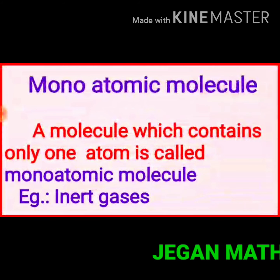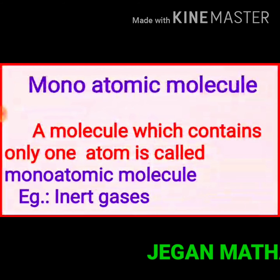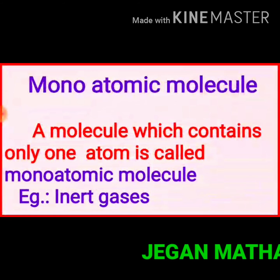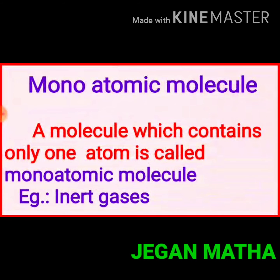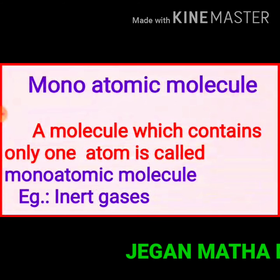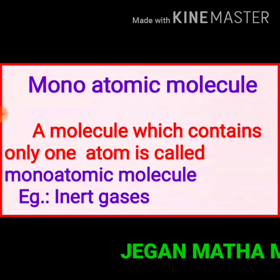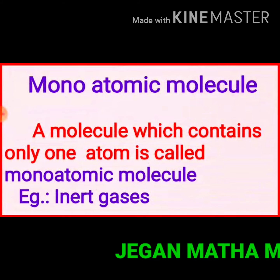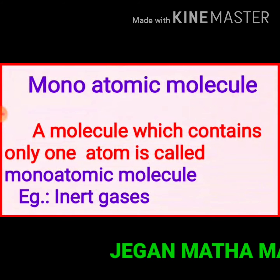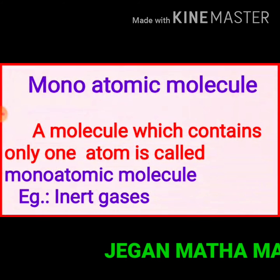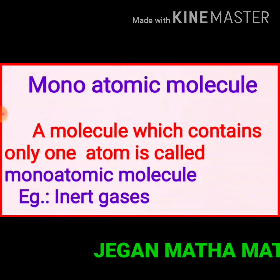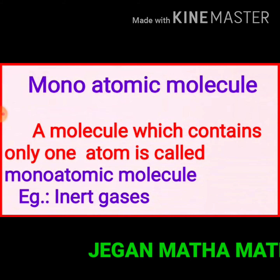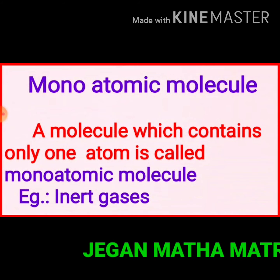Inert gases such as helium, neon, argon, krypton, and xenon are known as inert gases. These gases are examples of monoatomic molecules.